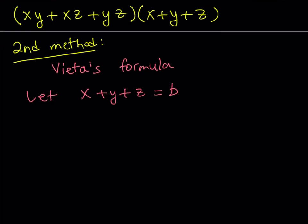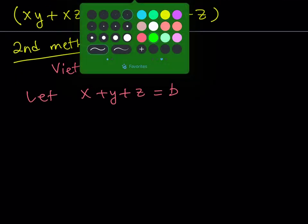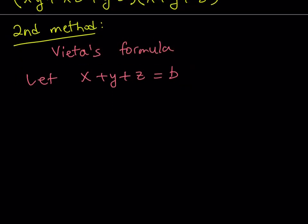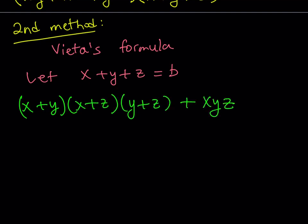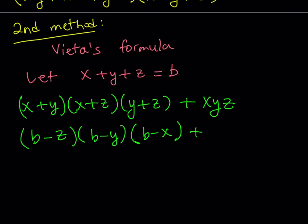Let's substitute this into our expression. Our original expression is (x + y)(x + z)(y + z) + xyz. By letting x + y + z = b, we can isolate each pair: x + y equals b − z, x + z equals b − y, and y + z equals b − x. We don't worry about xyz for now — at the end it's going to simplify.